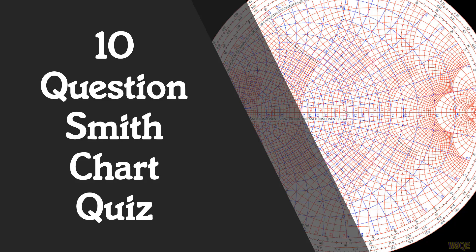I will then briefly discuss the answer. To learn more about the Smith Chart, do a Google or other search engine search for topics like 'what is the Smith Chart,' and look at the excellent information from Wikipedia and microwaves101.com. Also search for related topics like reflection coefficient, impedance, admittance, etc. Now let's get started with question number one.